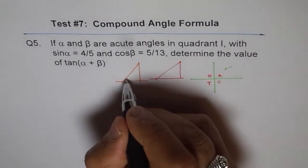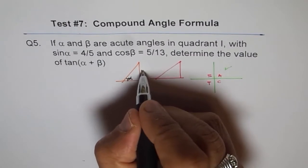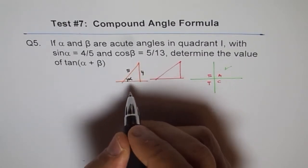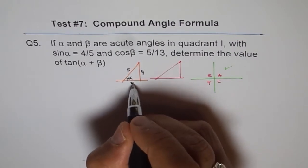Now, so this is α. So α sine is 4 over 5. That means this side is 4 and this is 5. You can find this side. 5 square minus 4 square square root and you'll get 3.